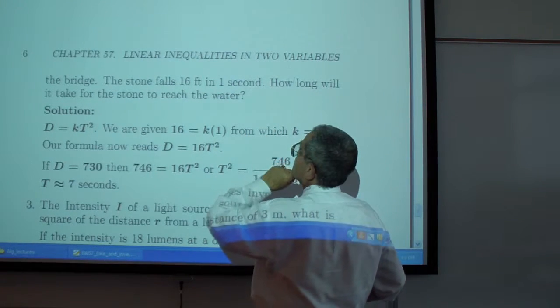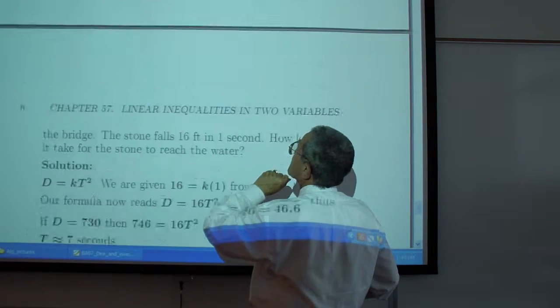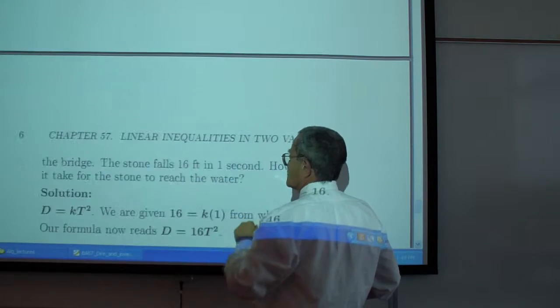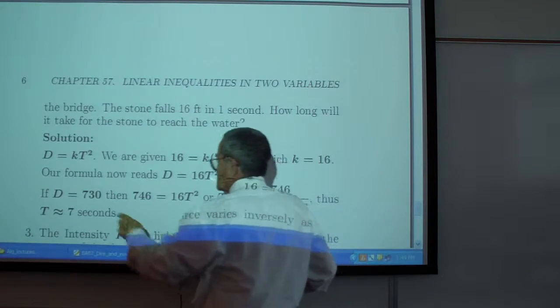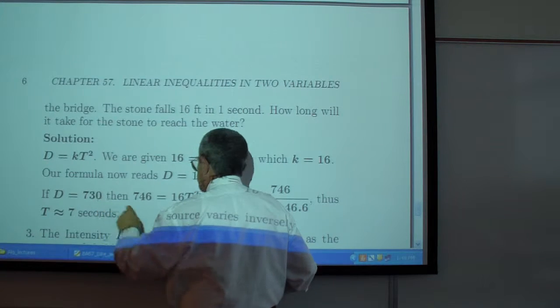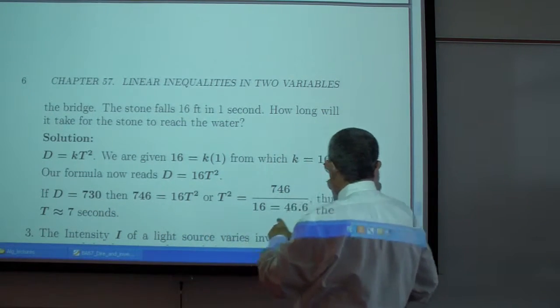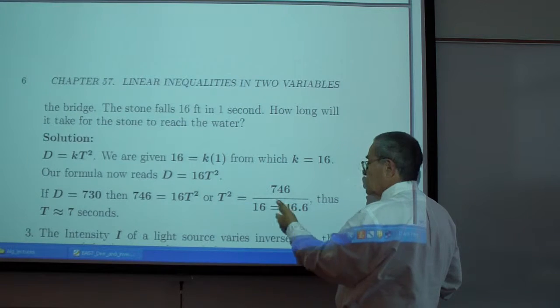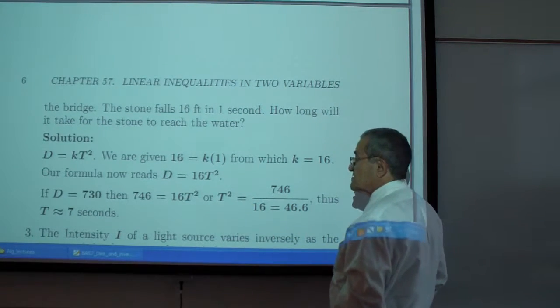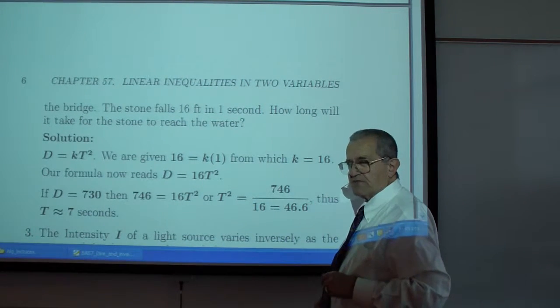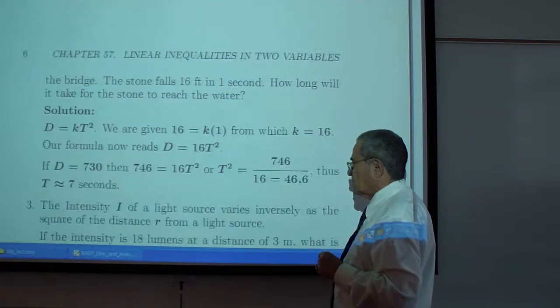Oh. 746. So if D is 746, that's a misprint, then 746 is 16 T squared, T squared is approximately 7 seconds. I need to check this. Something I think did not go right.